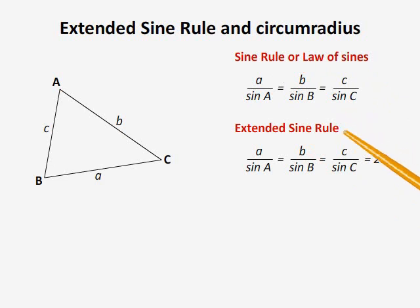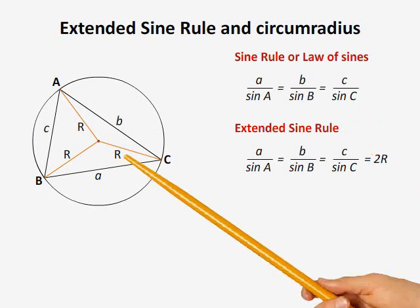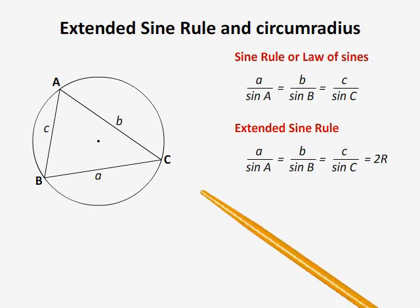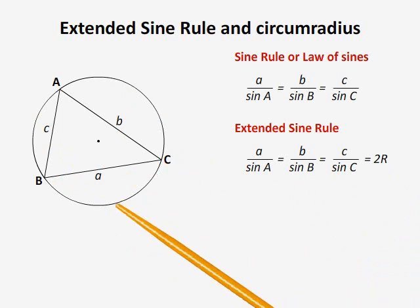The Extended Sine Rule involves another parameter called the Circumradius denoted by capital R. The Extended Sine Rule is as follows: a/sin A = b/sin B = c/sin C = 2R. The Circumradius is the radius of the circumscribed circle of the triangle ABC.